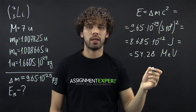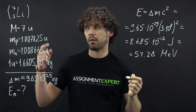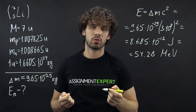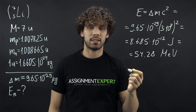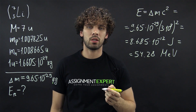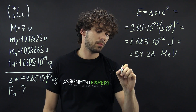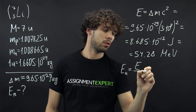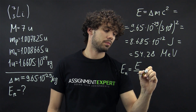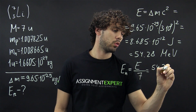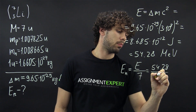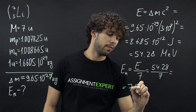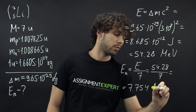Now this is the binding energy of all the nucleons inside of this nucleus. In our case we have 3 protons and 4 neutrons, so we need to divide this value by 7 to find the energy of the individual nucleon. E_n equals E of all the nucleons divided by 7, which is 54.28 divided by 7, and gives us 7.754 mega electron volts.